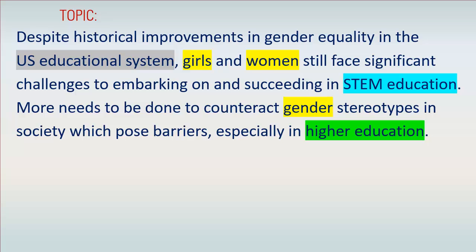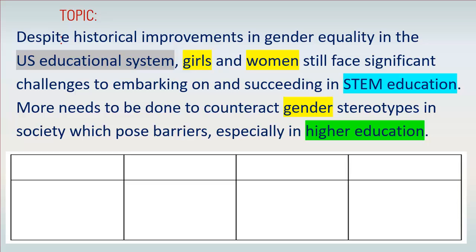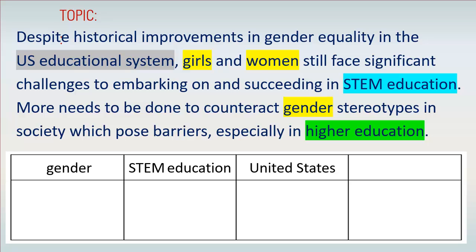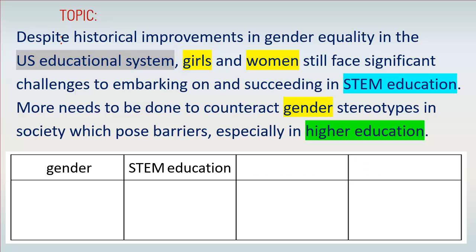Step 2 in the grid exercise is to draw a simple grid. For this topic, we might end up having a grid with four columns: gender, STEM education, United States, and higher education. Even though this topic is more complex than our first example, it's still perfectly fine to start very simply with just two topics: gender and STEM education.